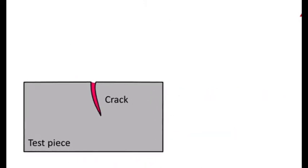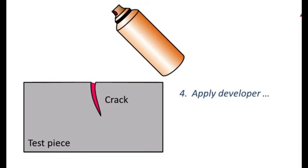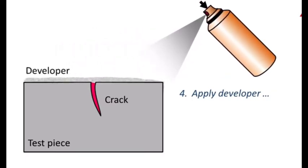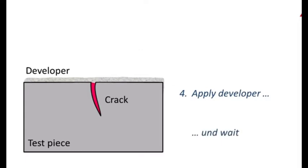Now the fourth step. After drying the test piece, a developer is applied onto the surface. The developer is a fine-grained white powder suspended in a liquid; it forms an even coating on the surface. After drying, it draws penetrant from the crack out onto the surface. The location of the crack is indicated clearly on the surface.